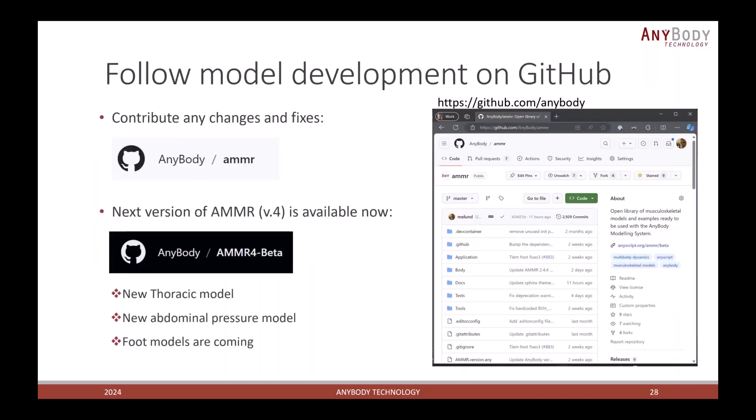In the end here, let me talk a little bit about our model development on GitHub. This is new. Recently, we have made our development repositories public on GitHub so you can follow the model development that is going on. Just go to github.com/anybody to find all our repositories. If you go to AMMR, you get the current AMMR version. But there is also this new version, AMMR4, that has this new thoracic model, the new abdominal pressure model. This is also probably where you will find the upcoming foot models when they are released.